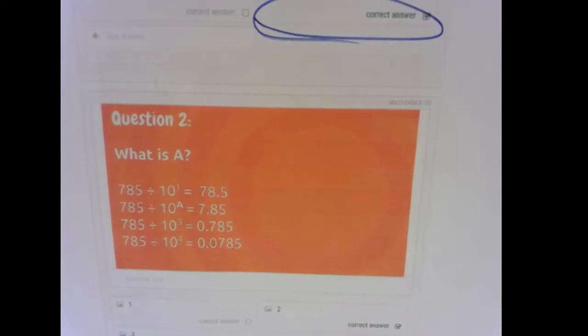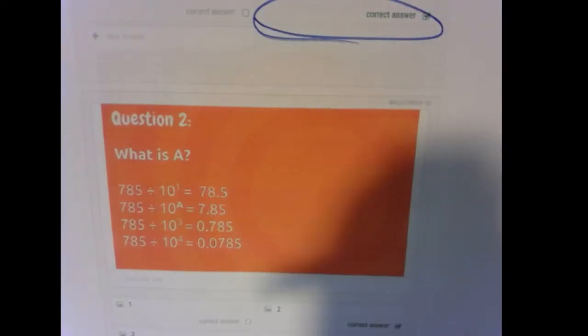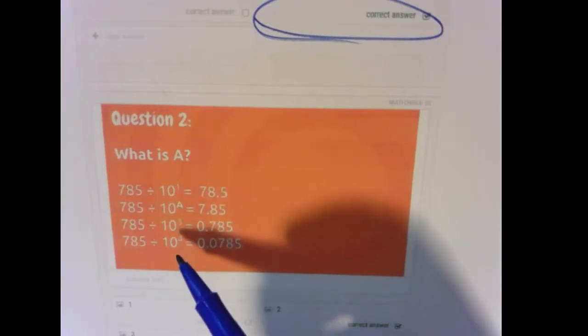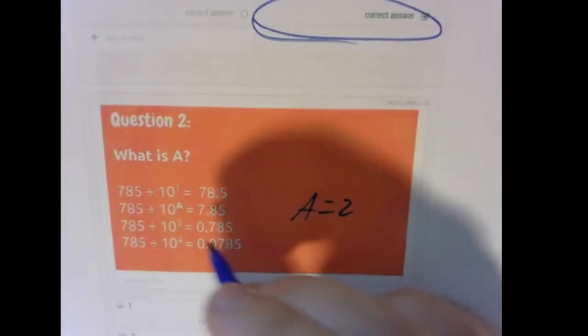Question 2, this asks it a little bit of a different way. It should be relatively straightforward to see the pattern 1, blank, 3, 4. So I'm guessing that A would be probably 2, just looking at the pattern.